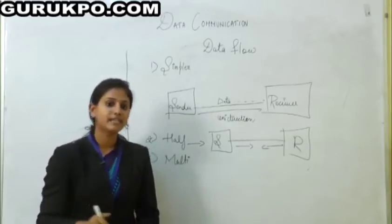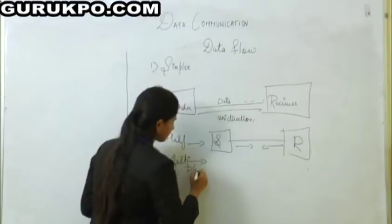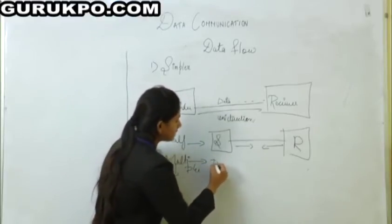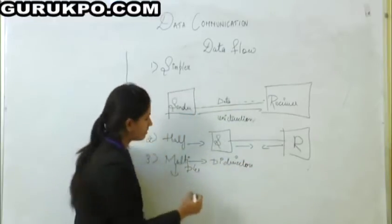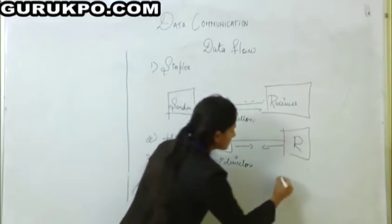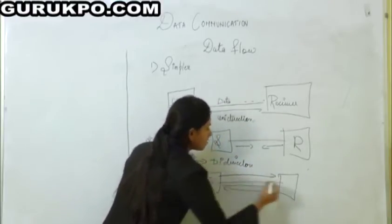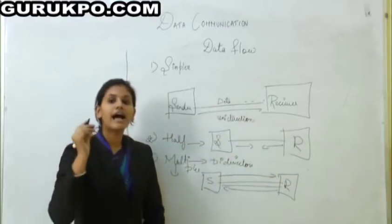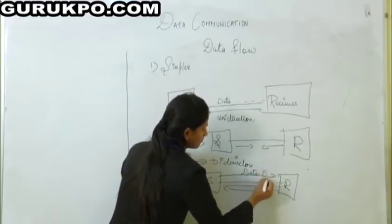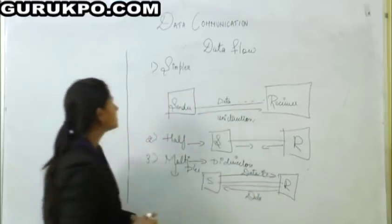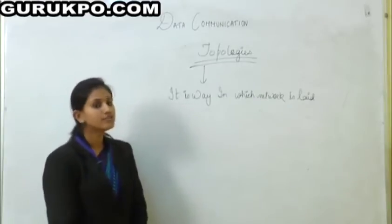In full duplex, it is a bi-directional process in which sender and receiver both simultaneously send and receive data at the same time. So this is the data flow of data communication.